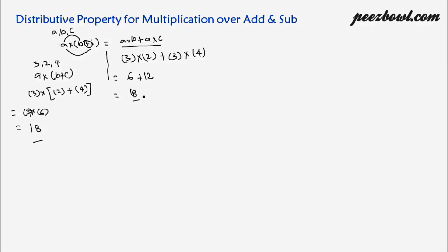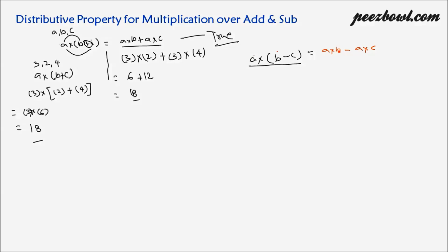So this property is true for addition — distributive property for multiplication over addition is true. Now we need to find out distributive property for multiplication over subtraction. In this case also, we are subtracting two integers b and c: a multiplied by b minus c. Each integer inside the parenthesis, b and c, will be multiplied by the integer outside, giving us a multiplied by b minus a multiplied by c.